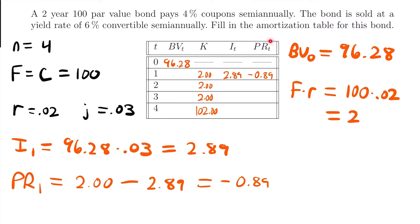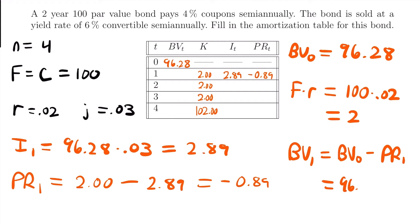The book value at time 1 is found by subtracting the principal from the previous book value: book value at time 0 minus the principal at time 1. That's $96.28 minus (negative $0.89). Since we're subtracting a negative amount, we're actually adding $0.89, giving us a book value at time 1 of $97.17.